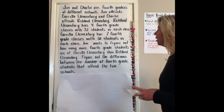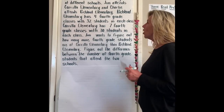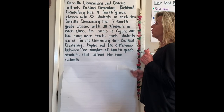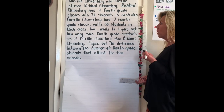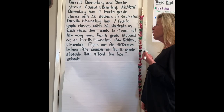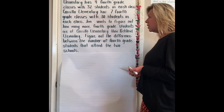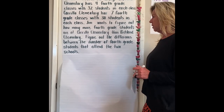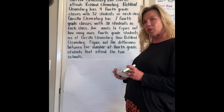Jim and Charlie are both fourth graders at different schools. Jim attends Carrillo Elementary and Charlie attends Richland Elementary. Richland Elementary has four fourth grade classes with 32 students in each class. Carrillo Elementary has seven fourth grade classes with 30 students in each class. Jim wants to figure out how many more fourth grade students are at Carrillo Elementary than Richland Elementary. Figure out the difference between the number of fourth grade students that attend the two schools.